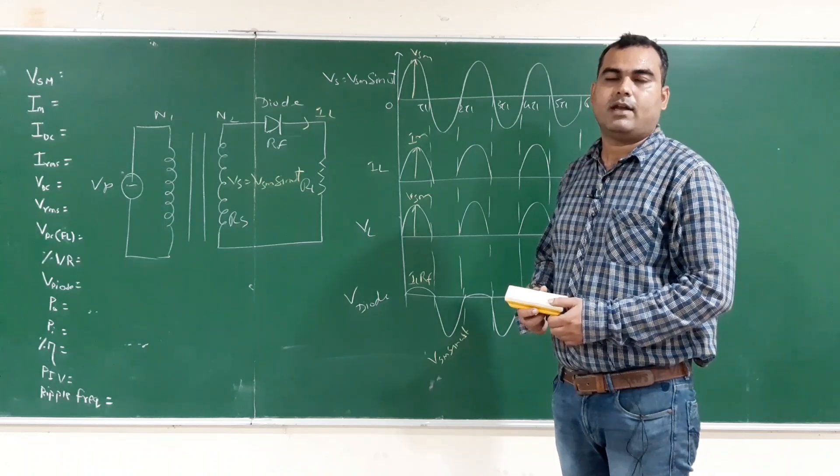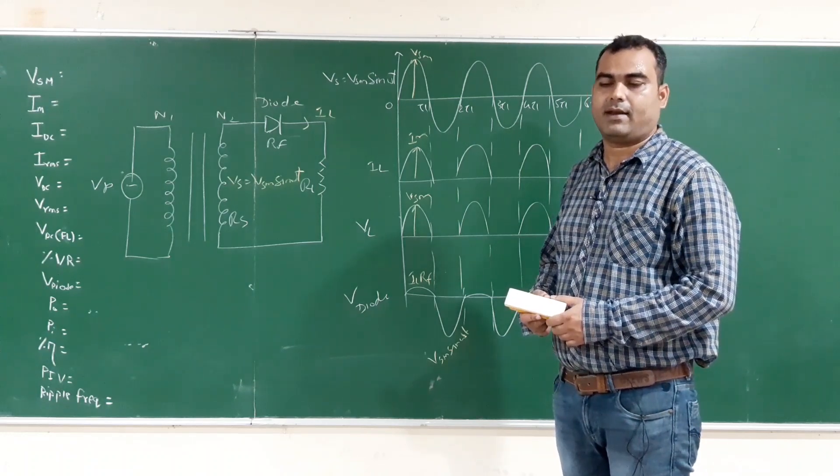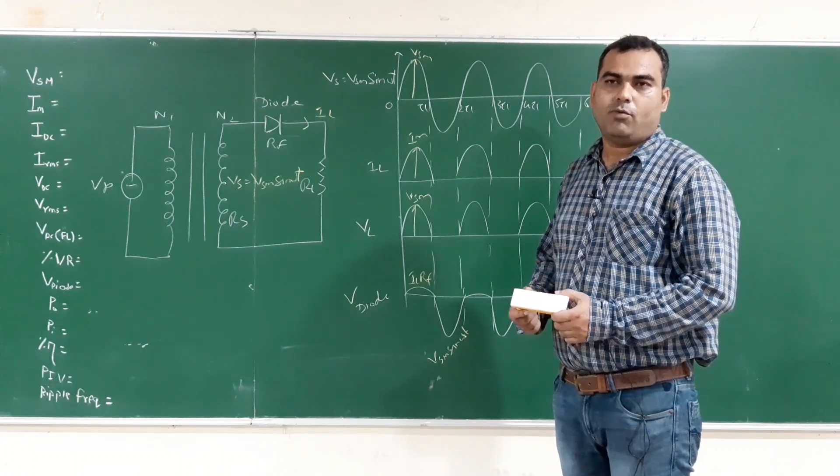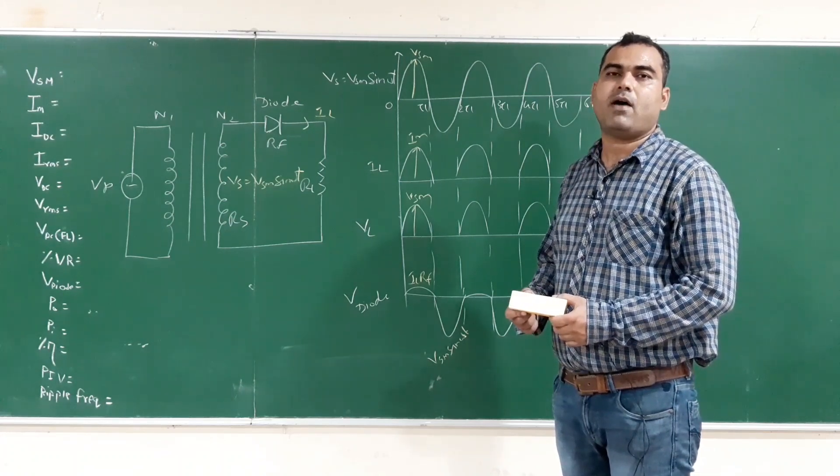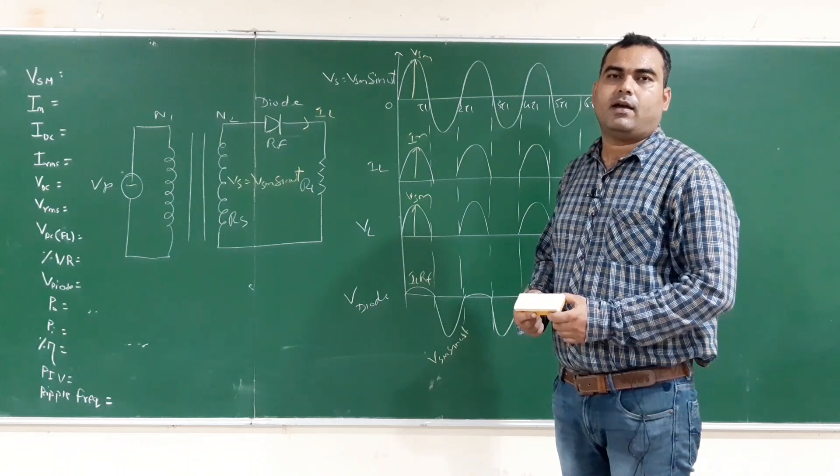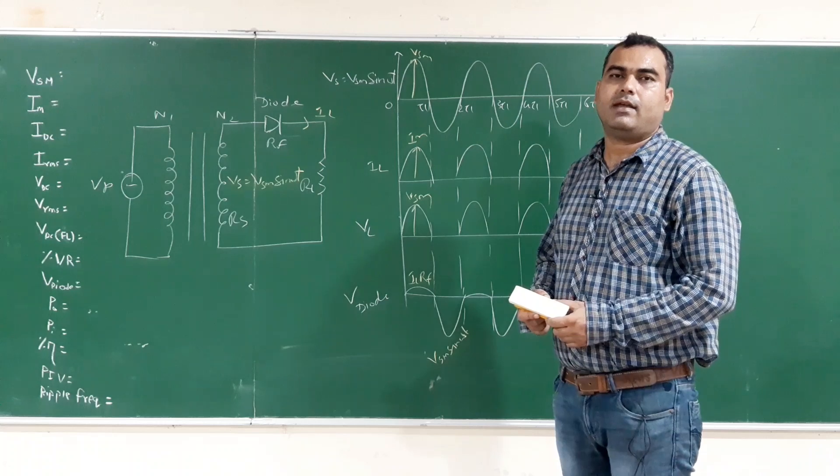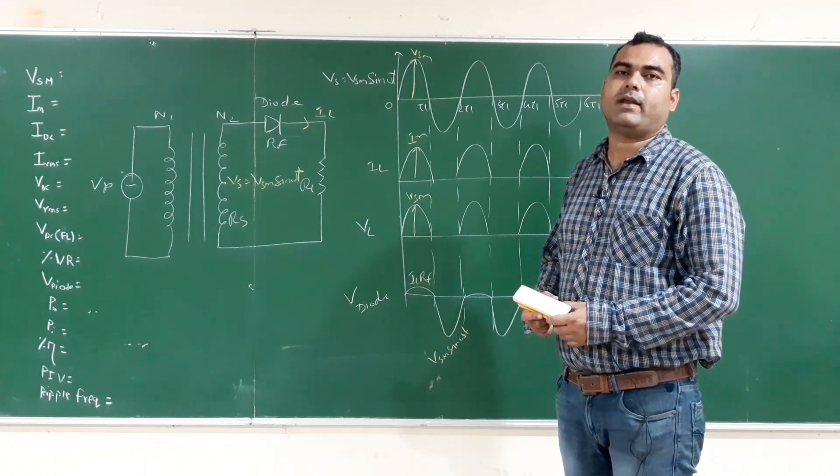Today we are going to solve numerical of half wave rectifier. Consider a single diode having 20 ohm resistance is to supply power from a supply of 110 volt RMS secondary winding to a load of 1 kilo ohm.